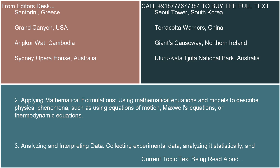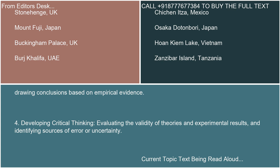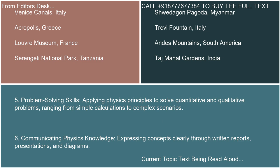3. Analyzing and Interpreting Data: Collecting experimental data, analyzing it statistically, and drawing conclusions based on empirical evidence. 4. Developing Critical Thinking: Evaluating the validity of theories and experimental results and identifying sources of error or uncertainty. 5. Problem Solving Skills: Applying physics principles to solve quantitative and qualitative problems, ranging from simple calculations to complex scenarios.